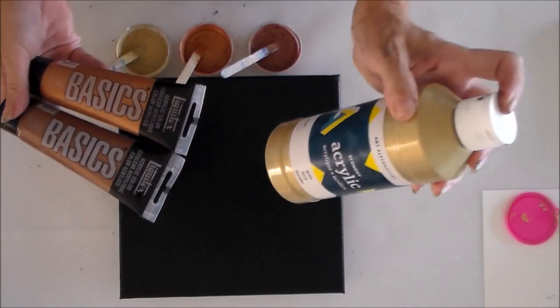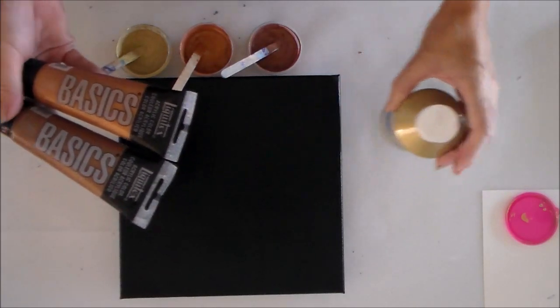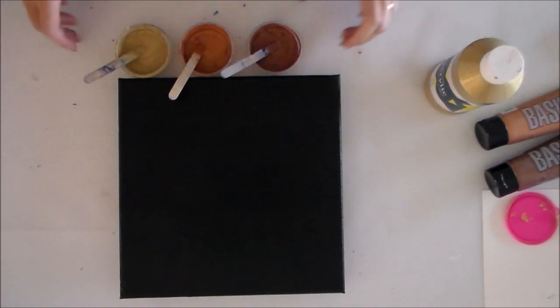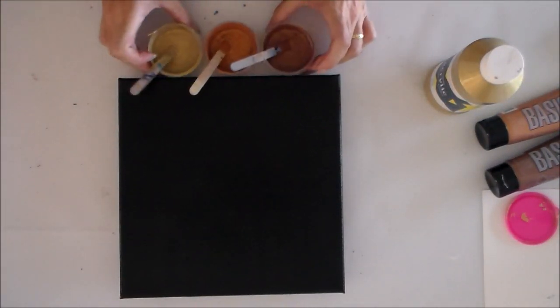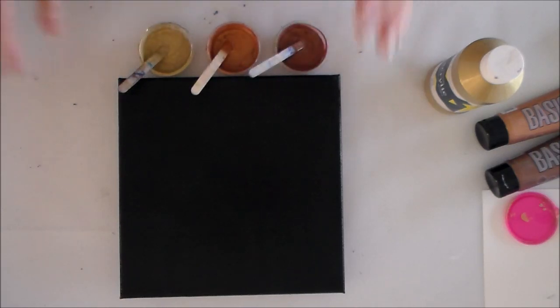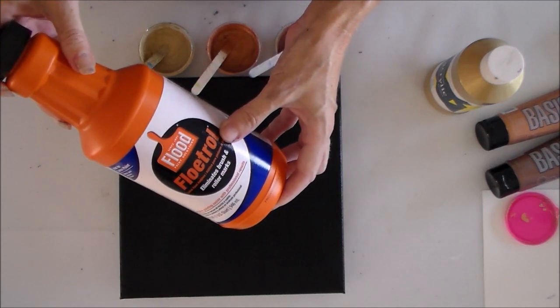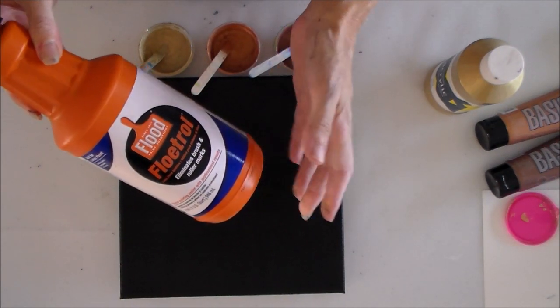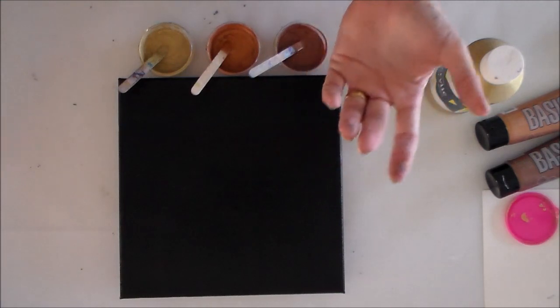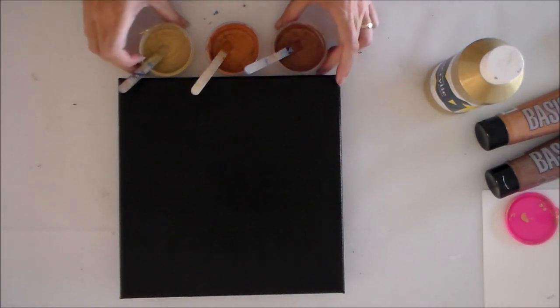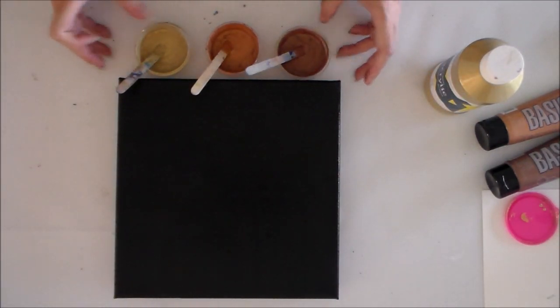I've mixed all of the paints up in advance, so I've got my three colors here. I mixed the paint around one part Floetrol to two parts paint and then water as necessary, about less than one part water.